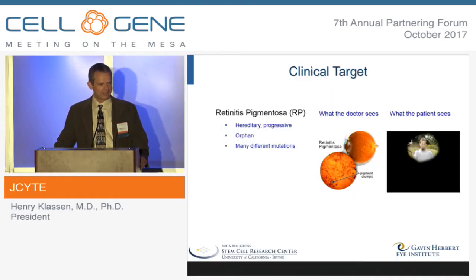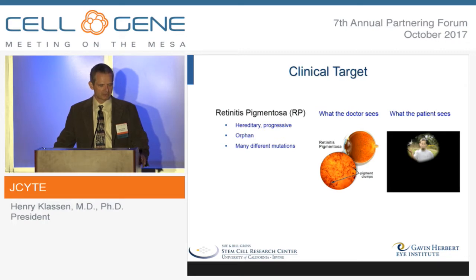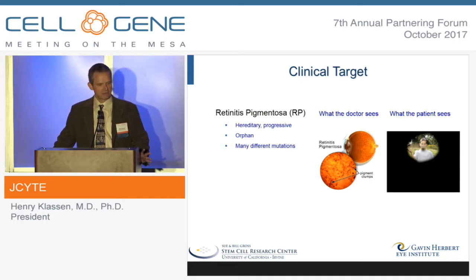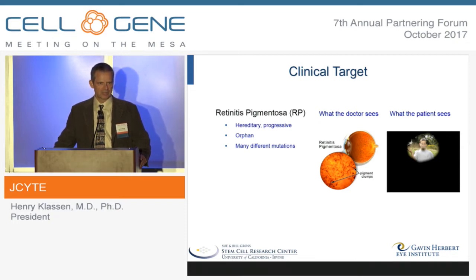RP is an orphan disease. It's genetic, and there are many underlying mutations. It gets its name from what's visualized by the ophthalmologist upon looking into the eye — there's an obvious pigmentary disturbance across the entire retina. From the patient's perspective, it's a progressive disease in which night blindness is followed by tunnel vision and ultimately culminating in complete blindness.